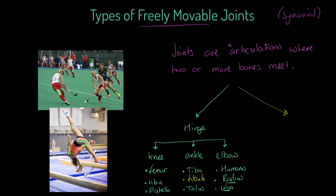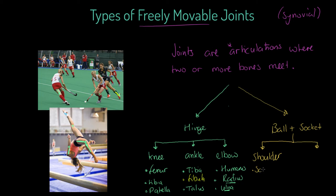Now we're going to focus on ball and socket joints — and again, these are not the only types of synovial joint. I'm going to make you aware of two ball and socket joints. The first is the shoulder. At the shoulder we're talking about the meeting of the scapula — the bone which forms the shoulder blade and provides the socket part of the joint — and the humerus, the upper arm bone. The humerus articulates at the elbow and also at the shoulder.